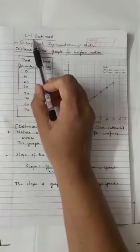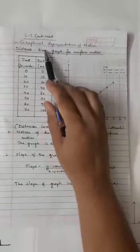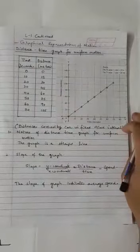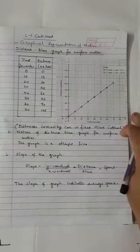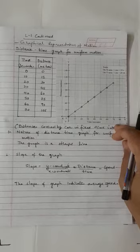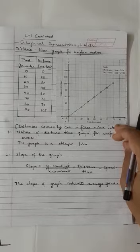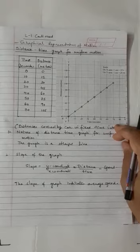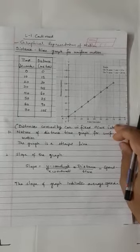Hello children, let us continue with lesson 1. Today we are going to see the graphical representation of motion. Graphical representation makes it simpler for us to understand data. When analyzing motion, graphs representing values of various parameters of motion make it simpler to solve problems. So let us understand the concept of motion and related things using the graphical method.